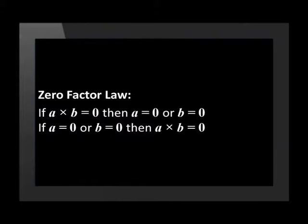So if a times b equals zero, then either a is equal to zero or b is equal to zero. This makes sense because if you multiply any number by zero, the answer will always be zero.